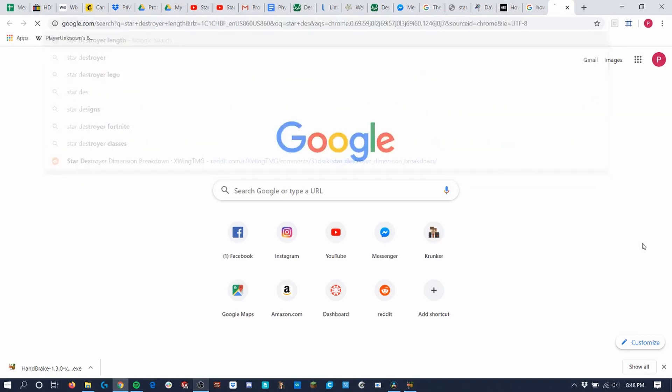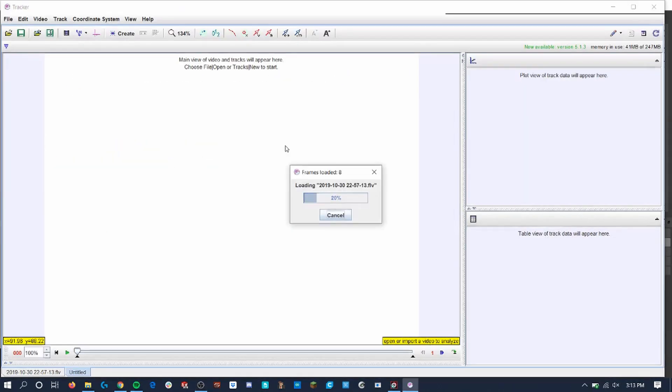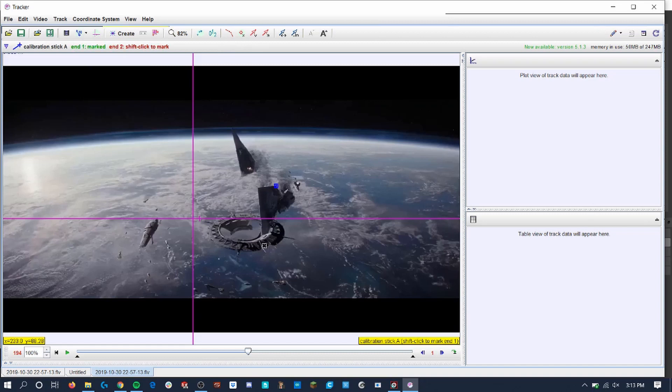First off, I looked up the Star Destroyer's length, which is 1600 meters long. Using the physics software tracker, I created a calibration stick of the same length.